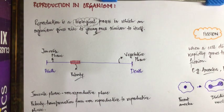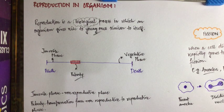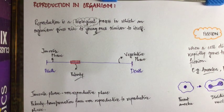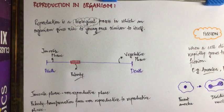For example, if you take a small puppy, that puppy looks similar to its parents because both of them are dogs and they are young. So reproduction is a biological process that produces young ones which are similar to the parents.